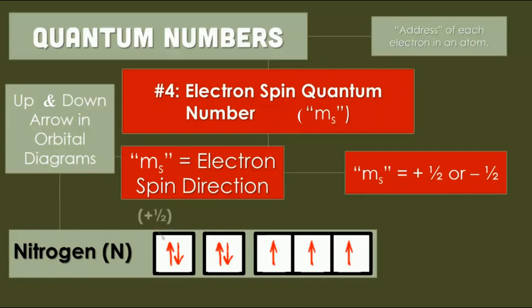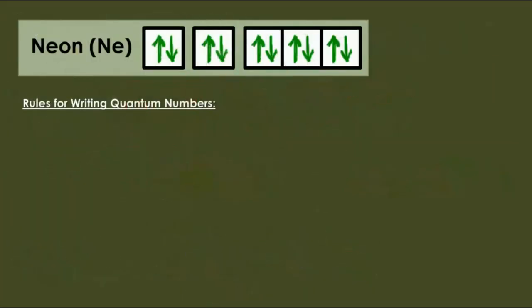These are represented by plus half and minus half. Look here, in nitrogen atom the electrons are distributed and the spin is denoted by up and down arrows. Look carefully, if up arrow is there, plus half, and down arrow is there, we have to represent it as minus half.